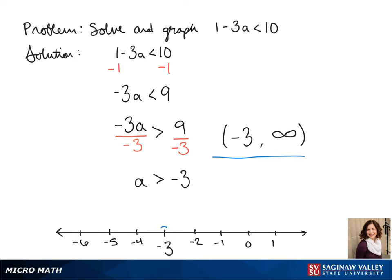To graph this, we want to put an open circle on negative 3, again since it's not included in the interval, and since it's everything greater, our line goes to the right.